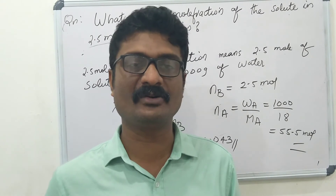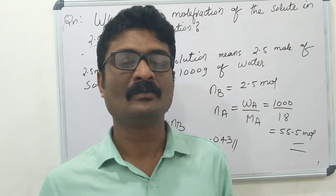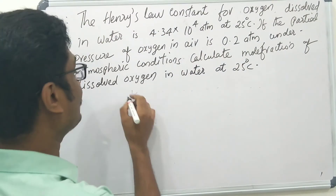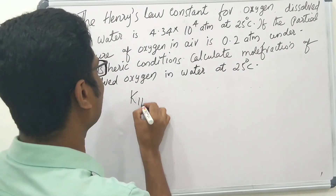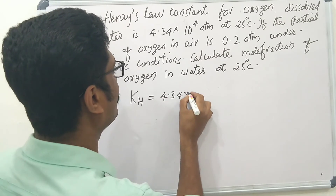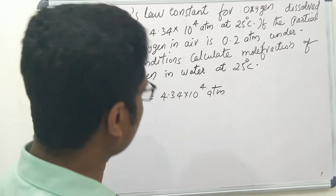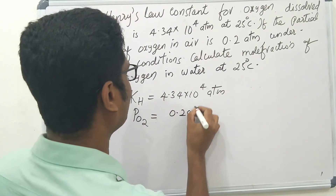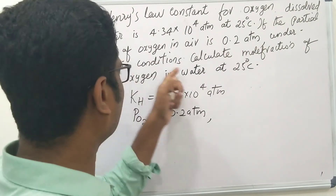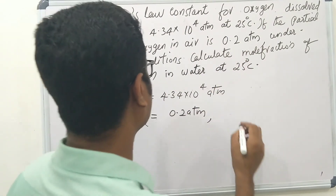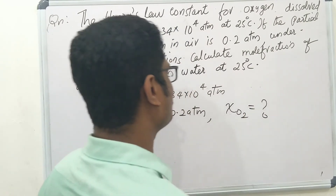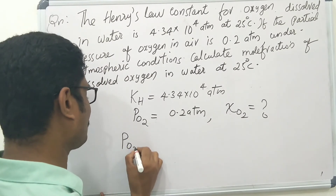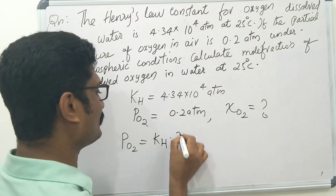Next problem: Henry's law. The Henry's law constant for oxygen dissolved in water is 4.34×10⁴ atm at 4°C. The partial pressure of oxygen is 0.2 atm under atmospheric conditions. Calculate the mole fraction of dissolved oxygen in water at 25°C. According to Henry's law, partial pressure equals KH times mole fraction.